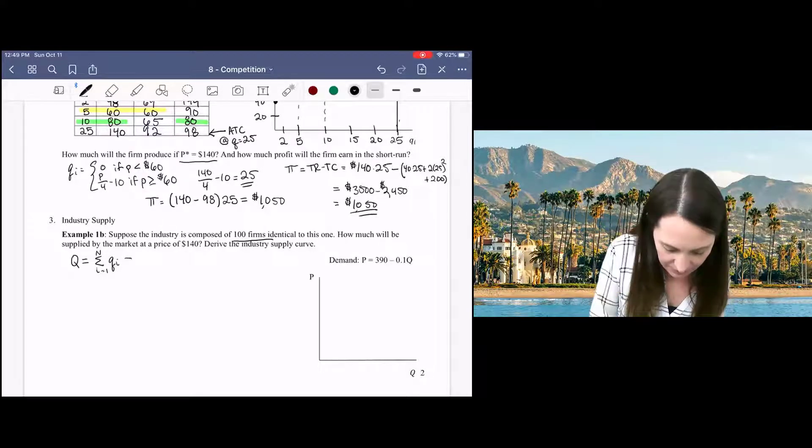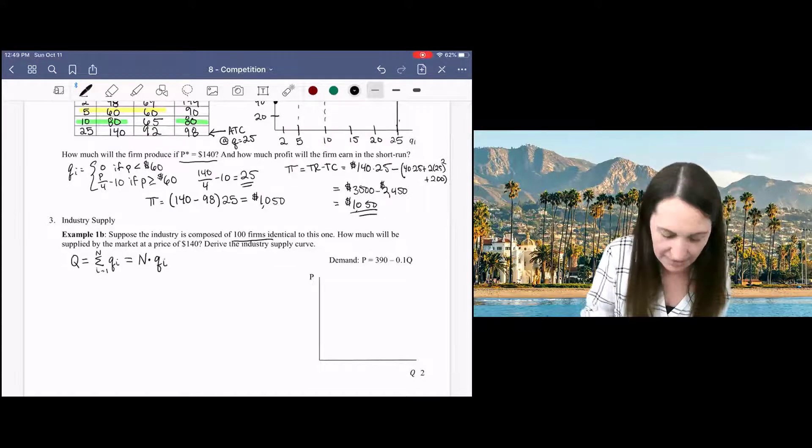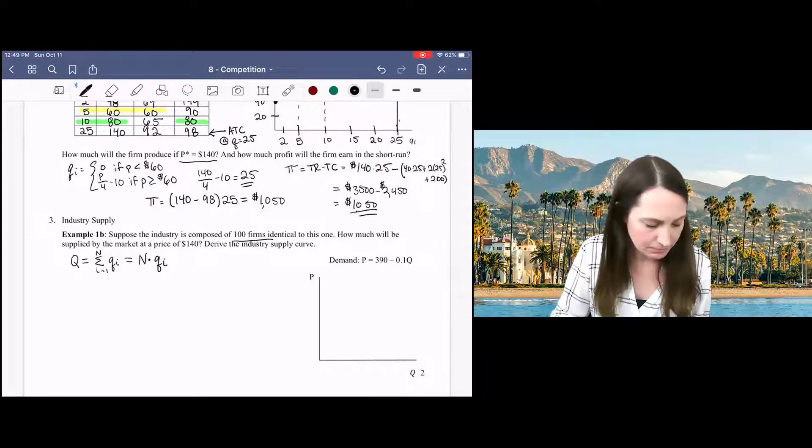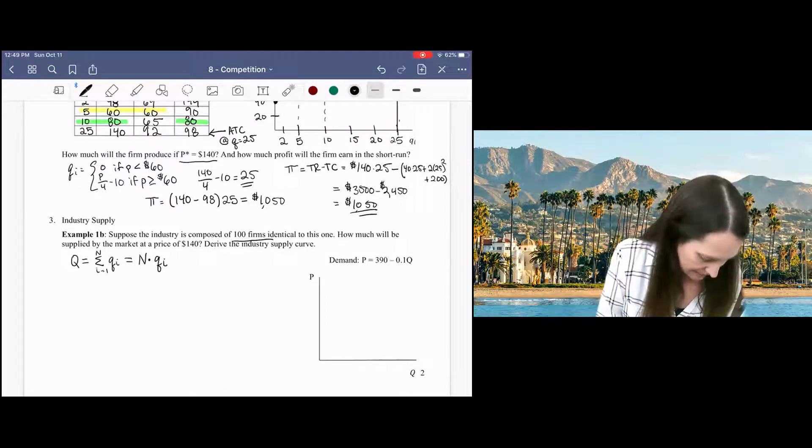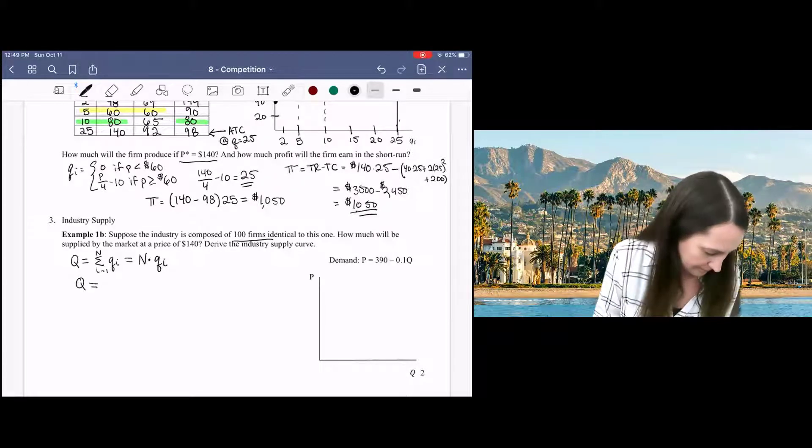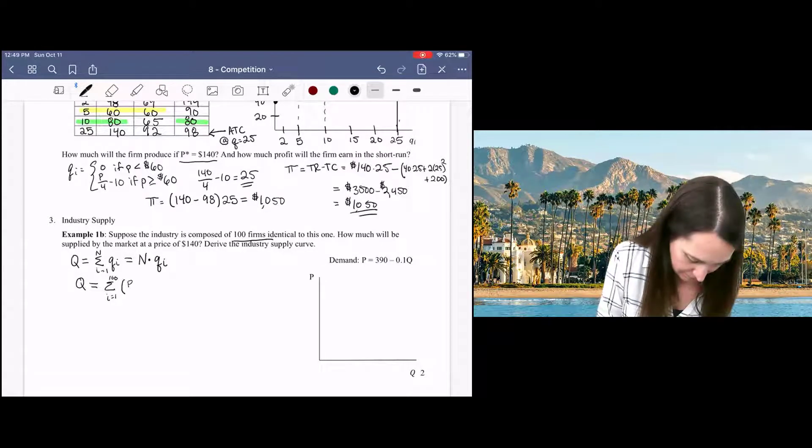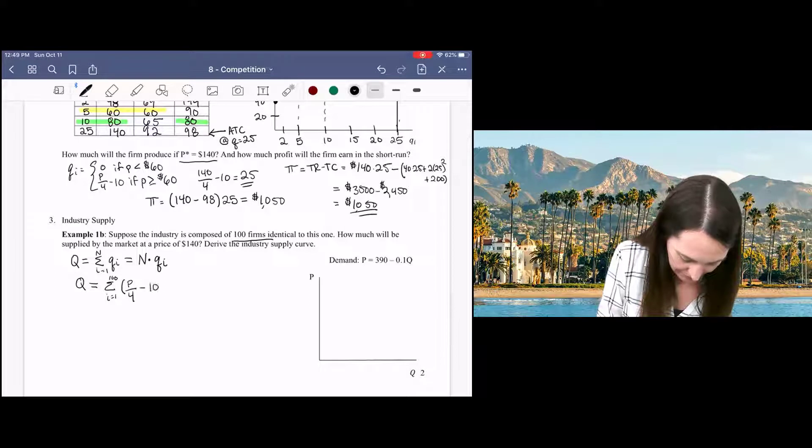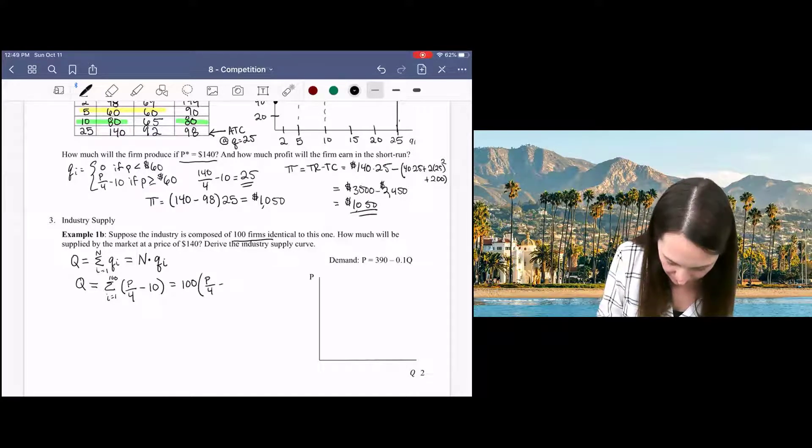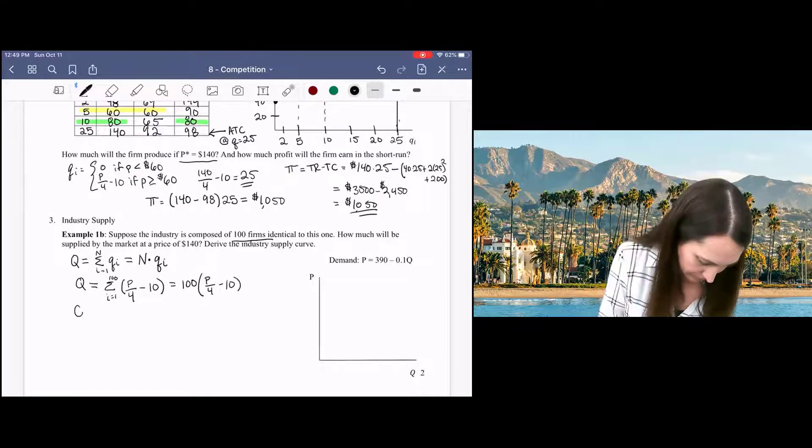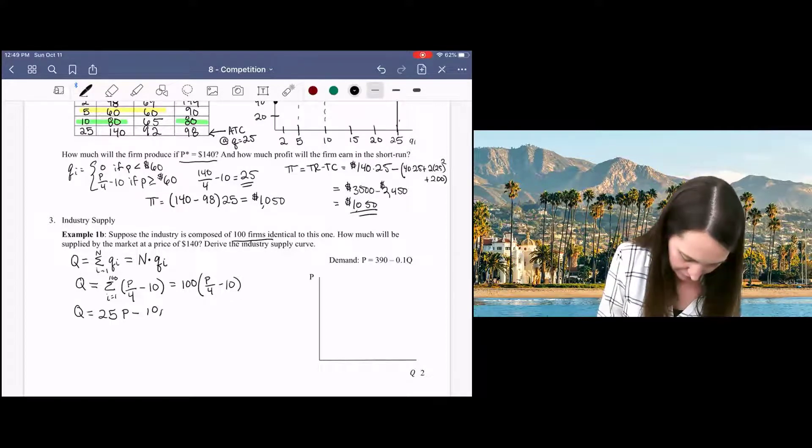And when all of the firms are identical, then that's the same as just multiplying by the number of firms in the market. So in this case, if we want our big Q market quantity, we're going to sum from I equals 1 to 100 our quantity supplied at the individual firm, which is equivalent to multiplying that supply curve by 100 so that we get a market supply curve equal to 25P minus 1,000.